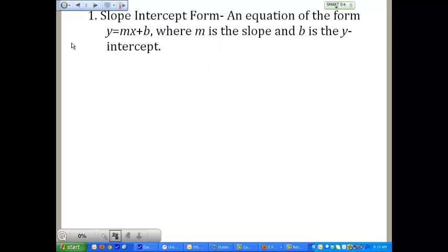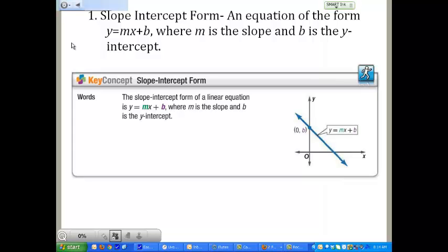Slope-Intercept Form is an equation of the form y equals mx plus b, where m is the slope and b is the y-intercept. We've actually started using this in other lessons, but you did not know what a wonderful form this is.